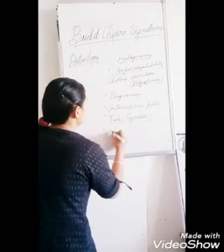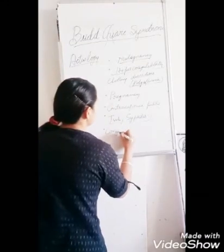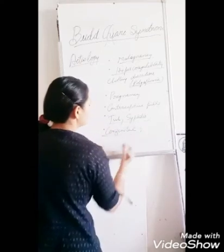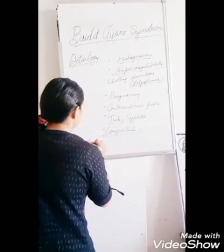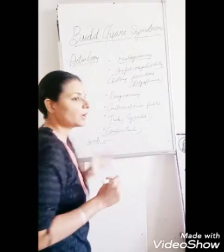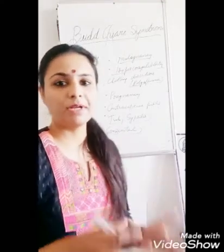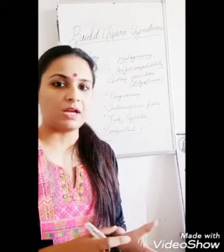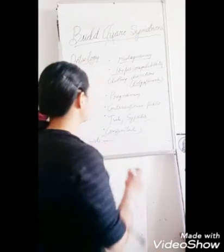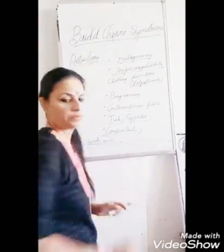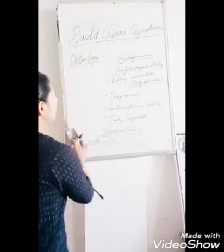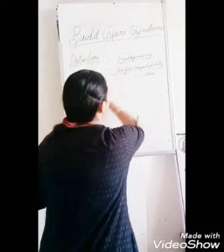There could also be a congenital factor. If congenitally there is presence of a web in the suprahepatic portion of the inferior vena cava, this web can be removed. These are the causes of Budd-Chiari Syndrome.